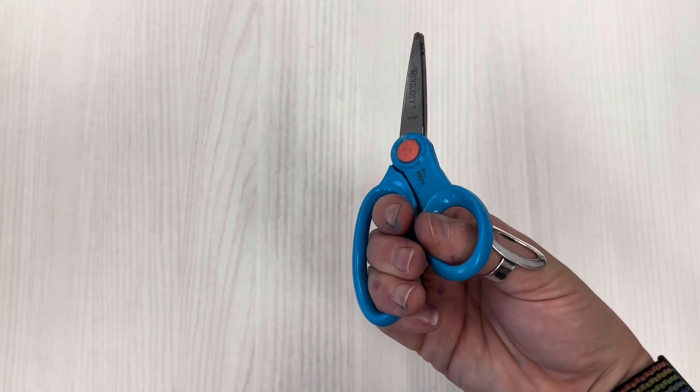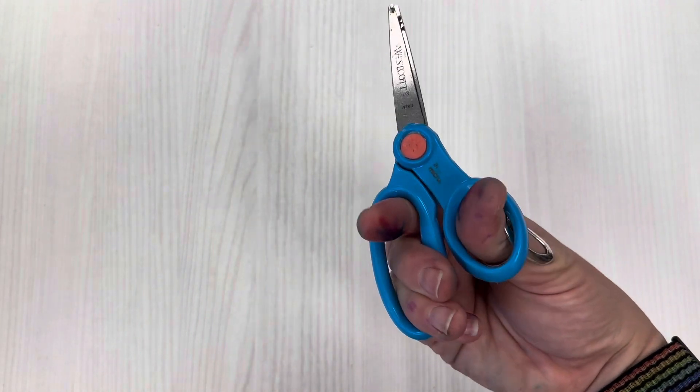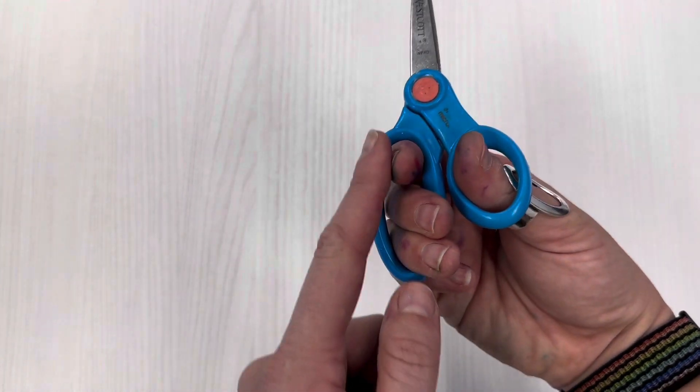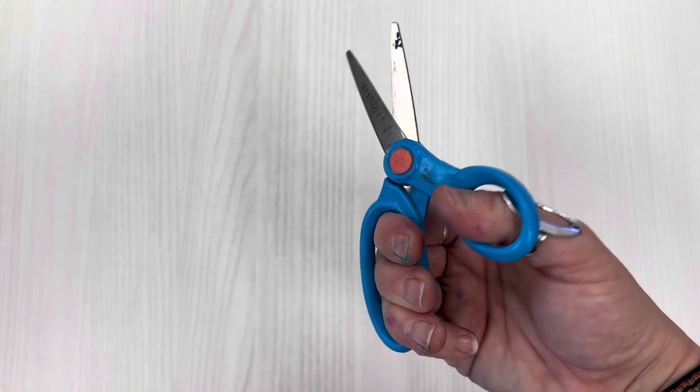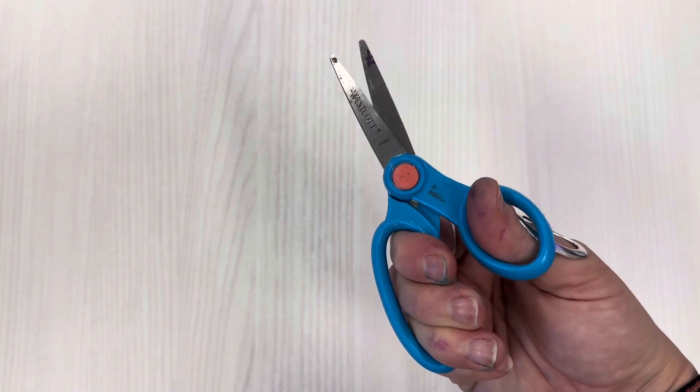When you are holding your scissors in your hand and you have your thumb in the circle and your other fingers in the oval you can open and close. Open and close.